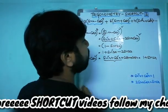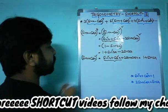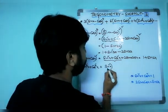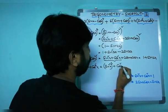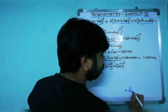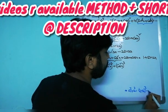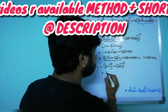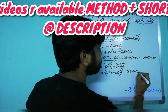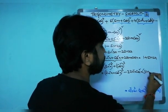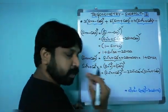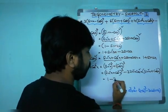Coming to the third result: sin⁶x + cos⁶x = (sin²x)³ + (cos²x)³. This is of the form a³ + b³, and the formula is a³ + b³ = (a + b)³ - 3ab(a + b). So this equals (sin²x + cos²x)³ - 3·sin²x·cos²x·(sin²x + cos²x).